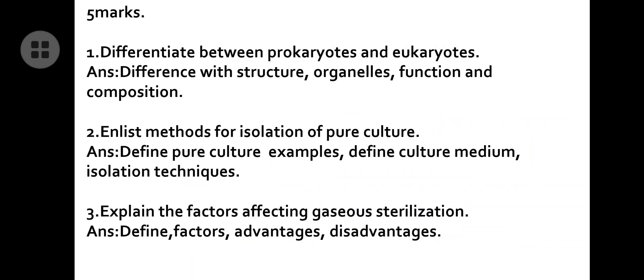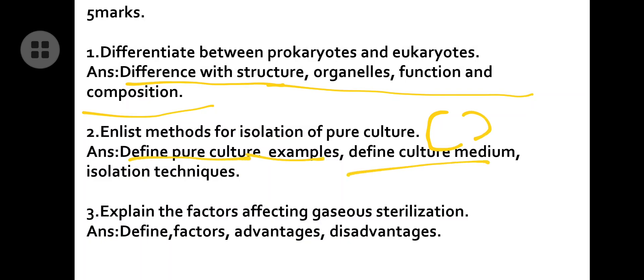Now for the five-mark questions. First, differentiate between prokaryotes and eukaryotes using structure, organelles, functions, and composition. Then enlist methods for isolation of pure culture. This question was previously asked as a 10-marker but has shifted to five marks. For a 10-mark answer write two isolation techniques; for five marks write one. Before writing the isolation techniques, write the definition, examples, and define culture media.